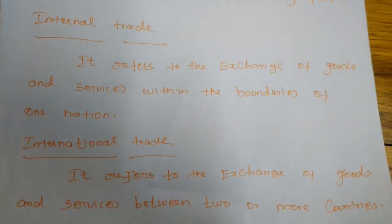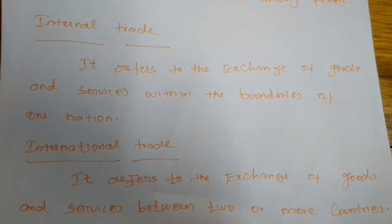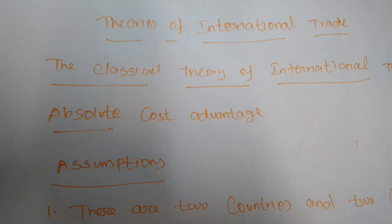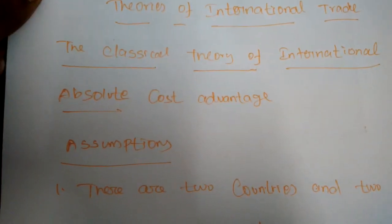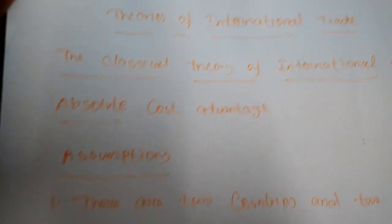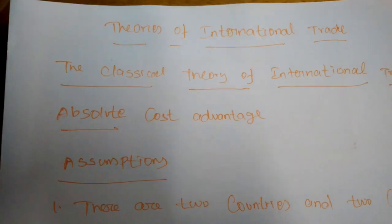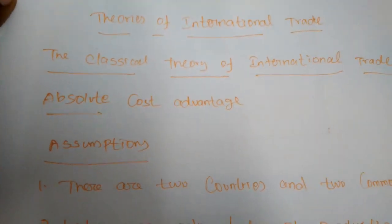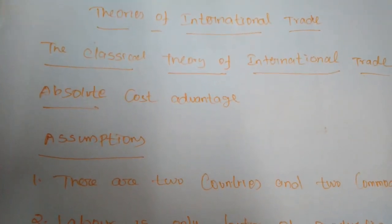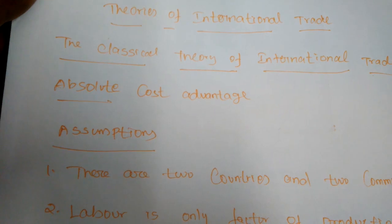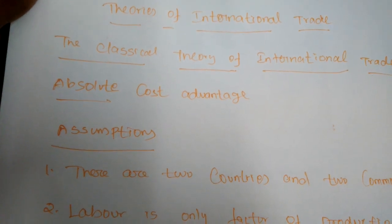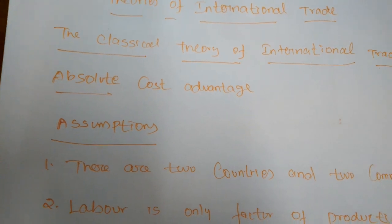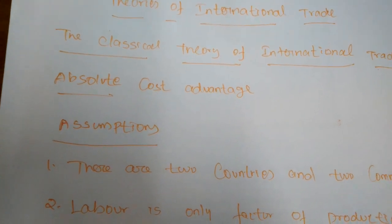We also studied the relationship between internal trade and external trade. Next we will go to the theories of international trade. There are many theories: classical theory, mercantilism theory, free trade theories, and refined free trade theories.